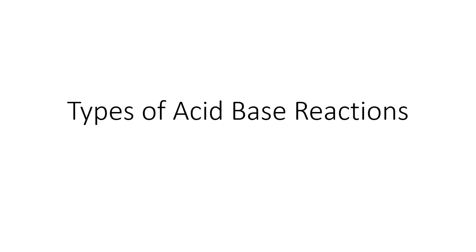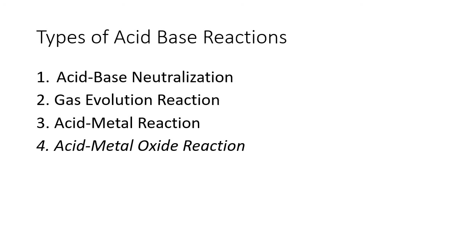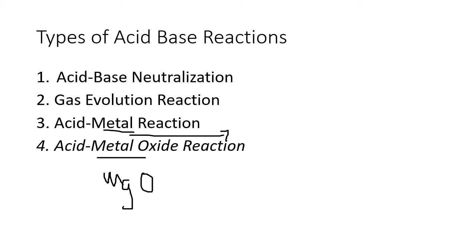There are four types we're going to talk about, and the last slide will have a summary of all of them. There's a basic neutralization reaction, ones that produce gas, and then two very specific ones: an acid reacting with a metal, and an acid reacting with a metal oxide. A metal oxide is something like magnesium oxide, whereas a plain metal would just be magnesium by itself.